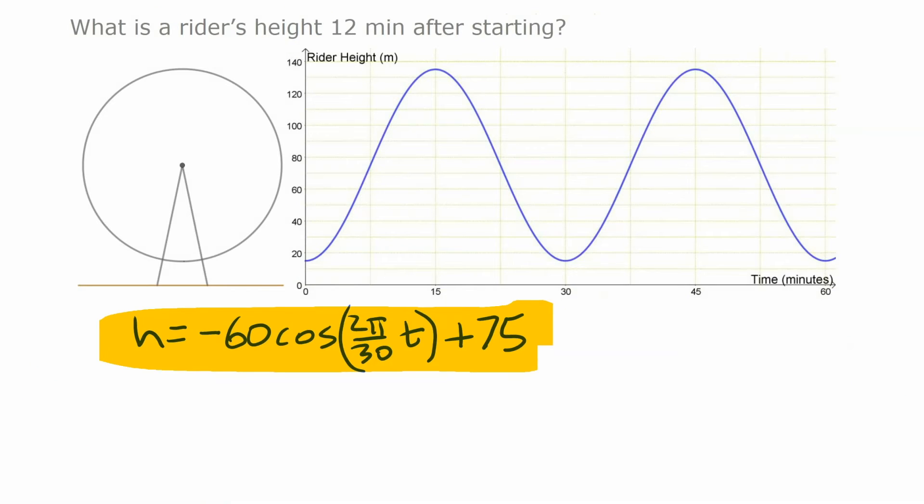Now that we have our model function, we can use it to calculate values. For example, what's a rider's height, say 12 minutes after they start. Now what we're looking for in this situation essentially is we want to find what the h value is when the t value time is 12. Now from the graph you can see 12 is somewhere there. And if we go up here it's going to be somewhere in that neighborhood. But we can find it exactly algebraically just by substituting in 12 here in our equation.